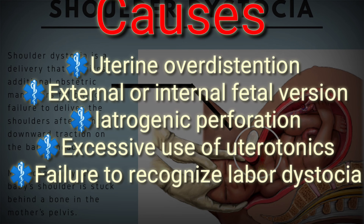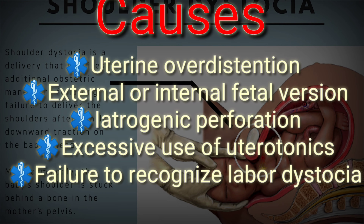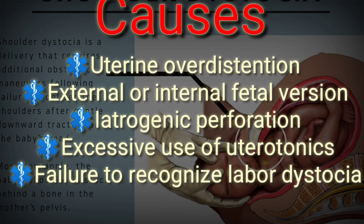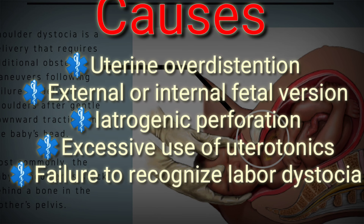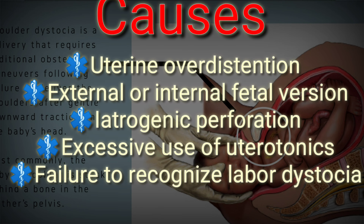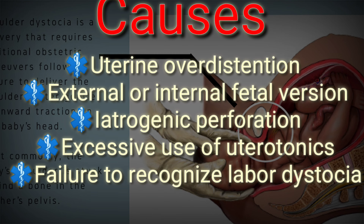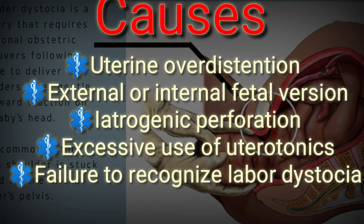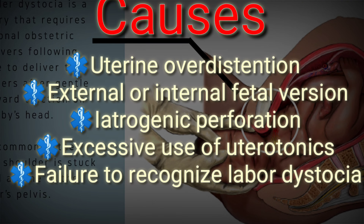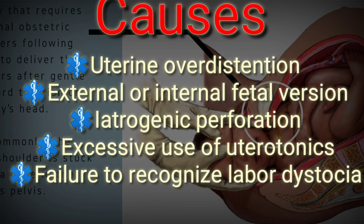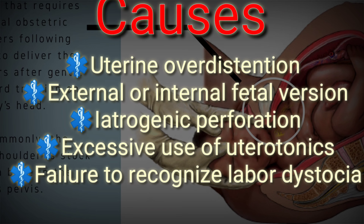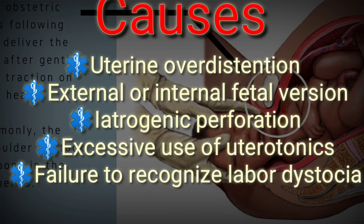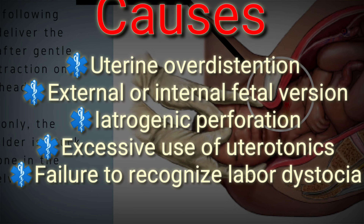What causes uterine rupture? Causes include uterine over-distension due to multifetal pregnancy, polyhydramnios, or fetal anomalies; external or internal fetal version; hydrogenic perforation; excessive use of uterotonics; and failure to recognize labor dystocia with excessive uterine contractions against a lower uterine restriction ring.